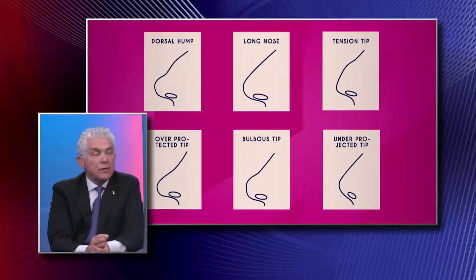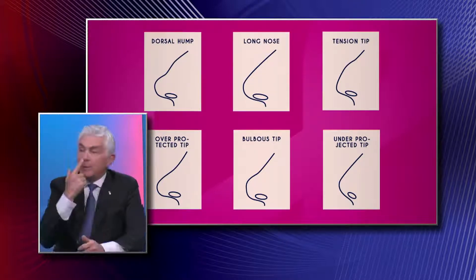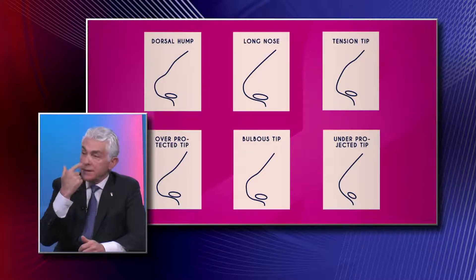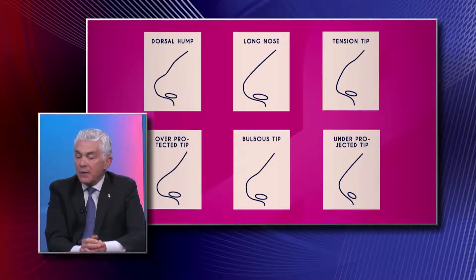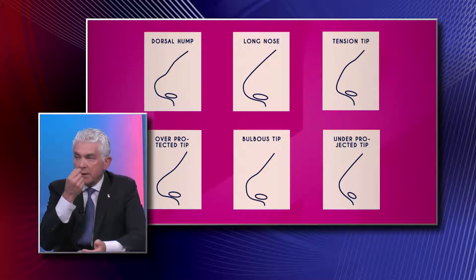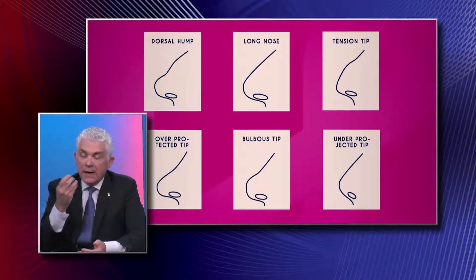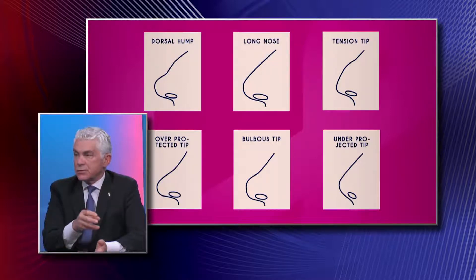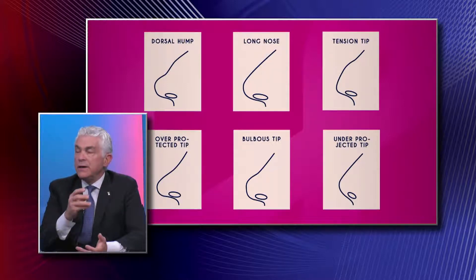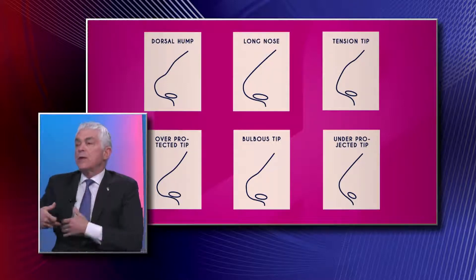The cartilage grafts can be taken from the septum, which is inside the nose, so there's no visible complication and you're not creating a problem in an area that might be seen. In patients who've had bad nose surgery or over-resected surgery and need cartilage, you can take rib cartilage in cases where the nose has been really overdone.